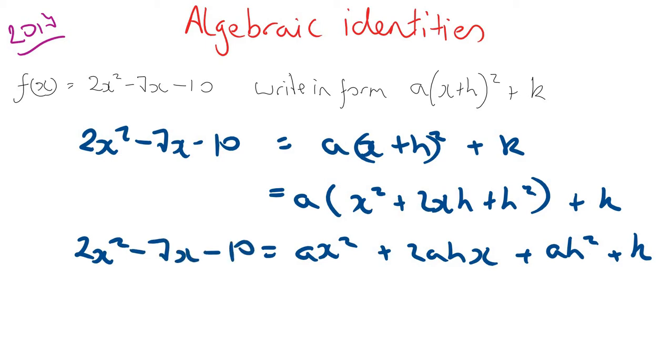For this to be true, the terms which are the same on the left hand side as the right hand side, i.e. x squared and x squared, they have to be equal.